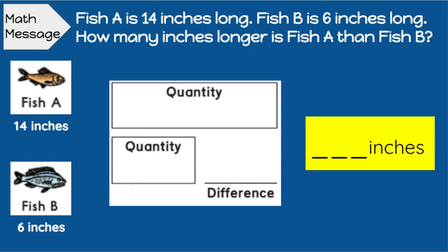Well, when we're looking at this problem, we see that fish A is 14 inches long, and that fish B is 6 inches long. So we know we want to find the difference. We want to know how much longer is A.